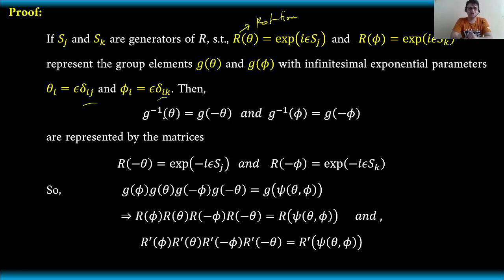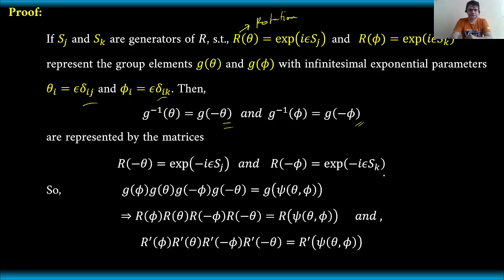The inverses of these group elements as functions of theta and phi respectively are equal to G of negative theta and G of negative phi respectively. Consequently, the matrices representing these group elements give us R of negative theta — which is just the inverse of R(theta) — equal to e to the negative i epsilon Sj, and R of negative phi equal to e to the negative i epsilon Sk.